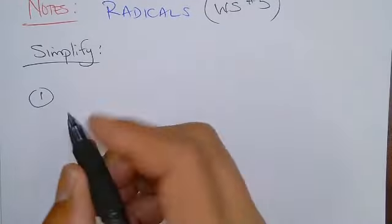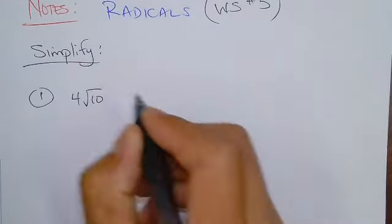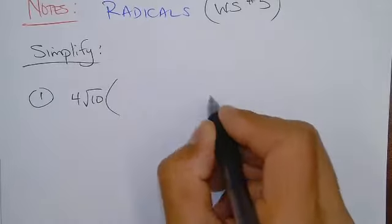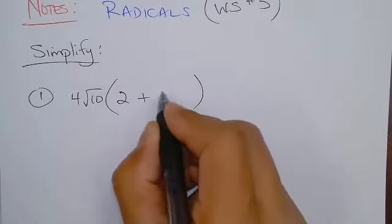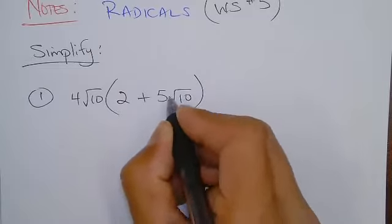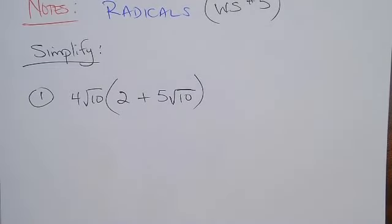Number one. 4 root 10, so there'll be this outside multiplier here and you'll see parentheses and then you'll have an expression on the inside of the parentheses. Just like the previous assignment, make sure you get that one done before you try this one.